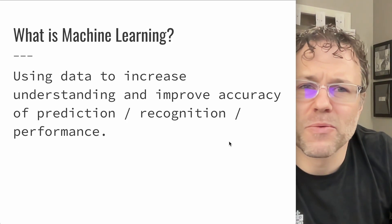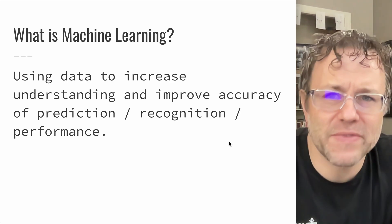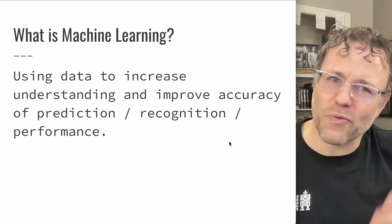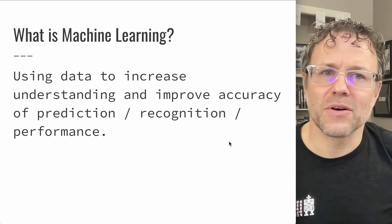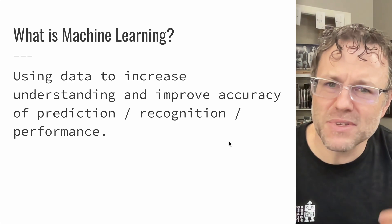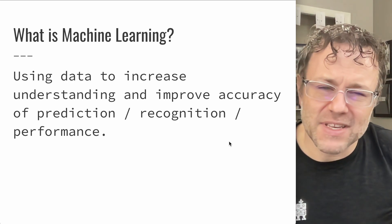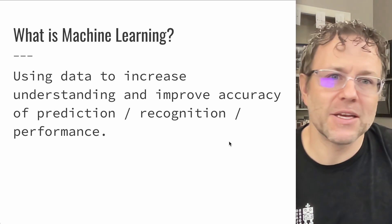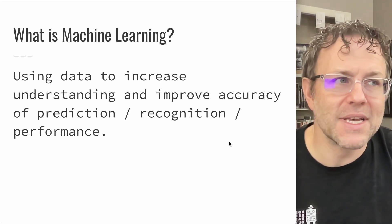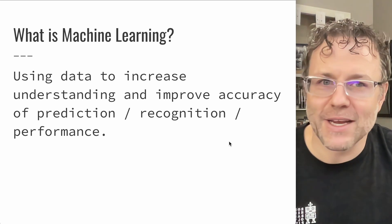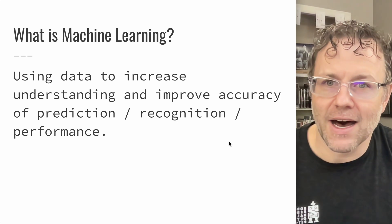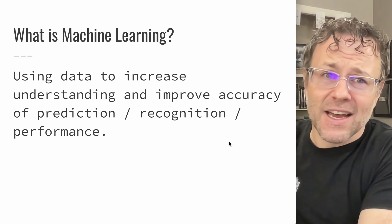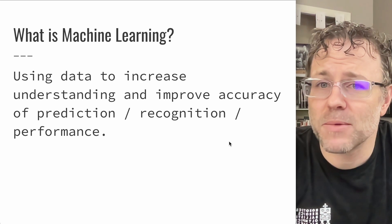When we look at machine learning, really what we're doing is using a bunch of data to increase our understanding and improve our accuracy of predictions, recognition, and performance. There are a lot of different applications of this, but you can think of it like recommendations. One of the early mass market applications of machine learning that hit people was Netflix trying to make recommendations for people to watch things — looking at a bunch of data, figuring out patterns, and using that to generate recommendations.